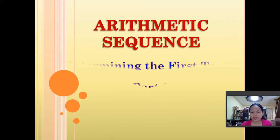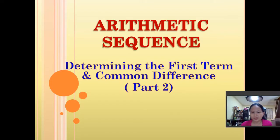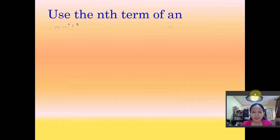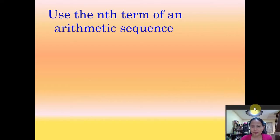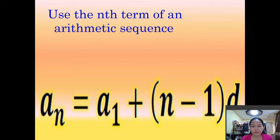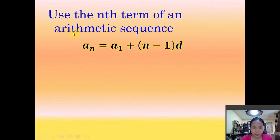Arithmetic Sequence. This time we will be dealing with word problems involving arithmetic sequence, and specifically I will teach you how to determine the first term and the common difference. In solving word problems involving arithmetic sequence, we are going to use the n-th term of an arithmetic sequence: a sub-n equals the first term plus quantity of n minus 1 times d.